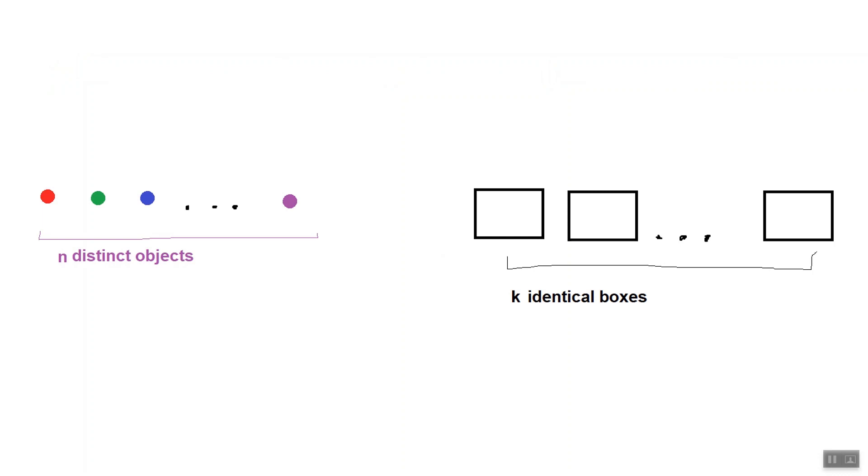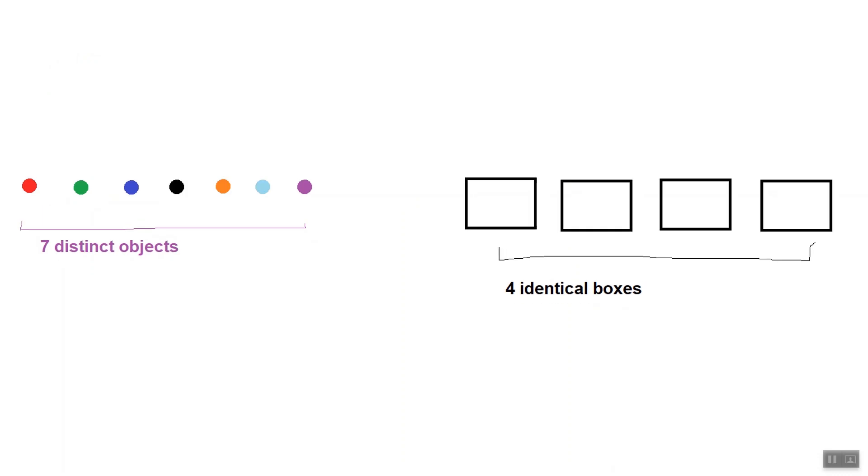I'd like you to think about this simple problem. How many ways can we distribute 7 distinct objects into 4 identical boxes? To solve the problem, we should understand how to calculate partition numbers ourselves.